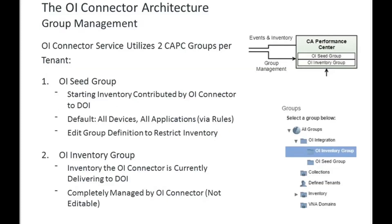The OI Connector service utilizes two groups in CAPC. The first is the OI seed group, which is the starting inventory contributed by the OI Connector to the platform. These groups don't exist when you install CA Performance Center, but when the connector starts up, if they don't exist, it will create them. The OI seed group is initially created with a default of all devices and all applications, and these are rule-based groups, so new devices discovered are automatically included.